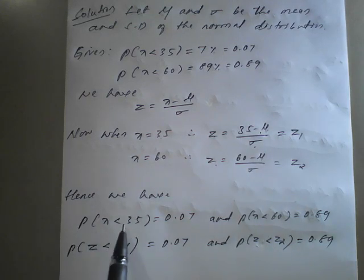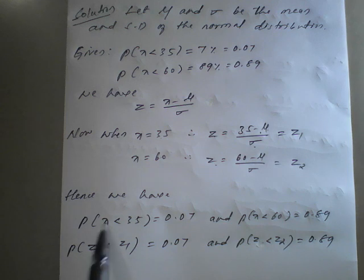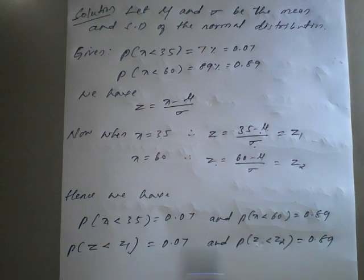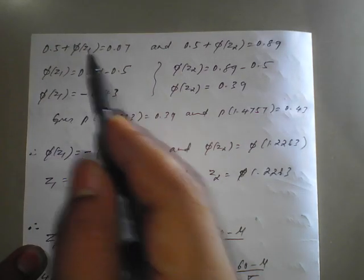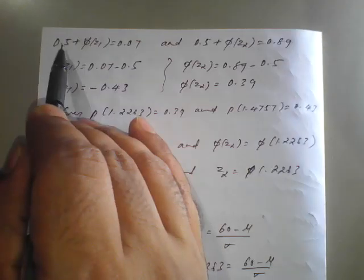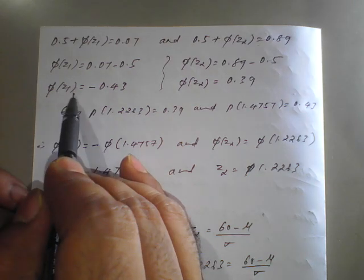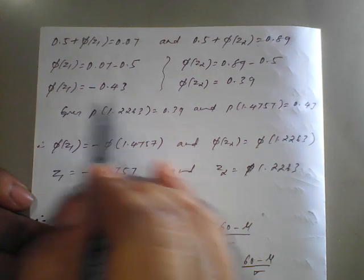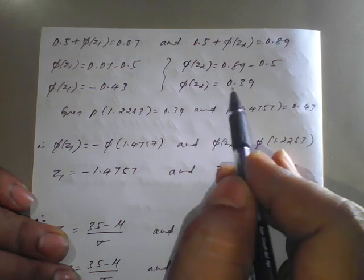P(X < 35) = 0.07 becomes P(Z < Z₁) = 0.07, giving 0.5 + φ(Z₁) = 0.07, so φ(Z₁) = −0.43. Similarly P(Z < Z₂) = 0.89 gives 0.5 + φ(Z₂) = 0.89, so φ(Z₂) = 0.39.